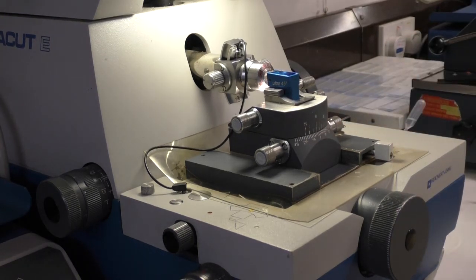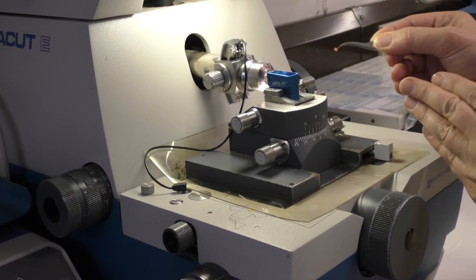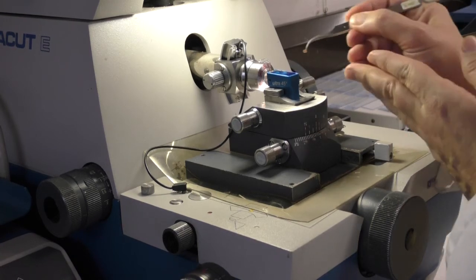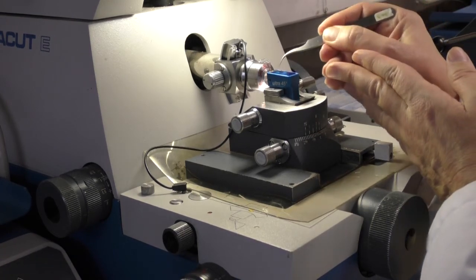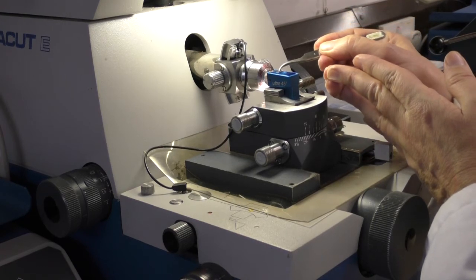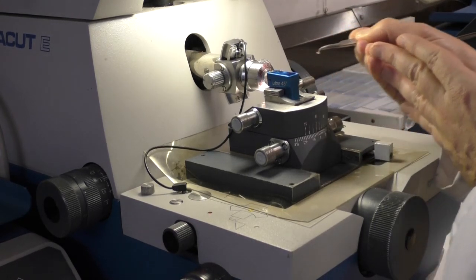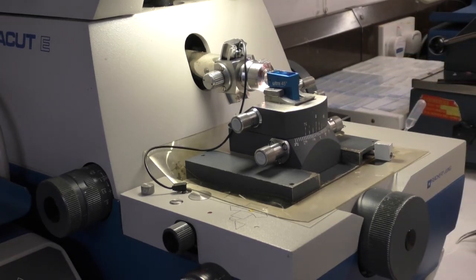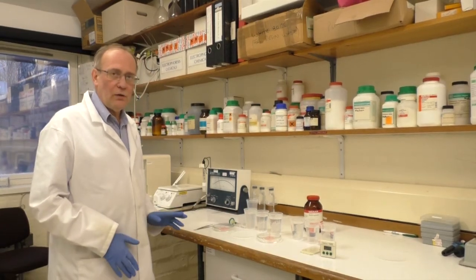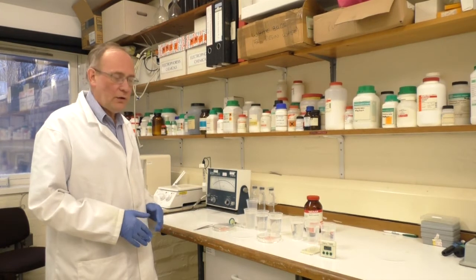We turn the motor off, and then we try to collect the sections using these copper grids. These grids are only 3.05 millimetre wide. What we try to do now is place the grid under the water, beneath the sections, and we pick them up onto the grid surface. We can then dry the grid off, and that will be ready in a little while to be stained. So once you've collected your sections onto a grid, and they've been dried, it's possible then to stain them.